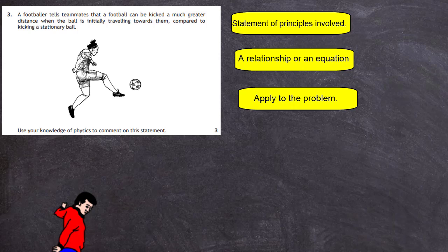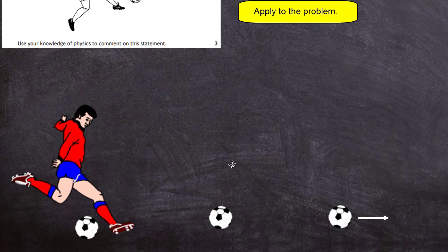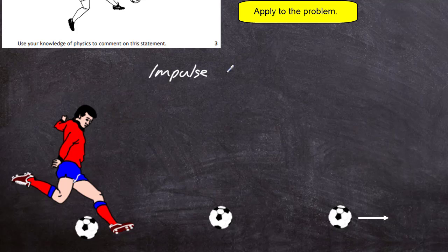Let's begin with the statement of principles involved. A footballer tells teammates that a football can be kicked a much greater distance when the ball is initially traveling towards them compared to kicking a stationary ball. It must be to do with impulse — when an object is given a force over a given contact time, it's going to change the momentum. That's what we call an impulse, and momentum is a vector quantity.